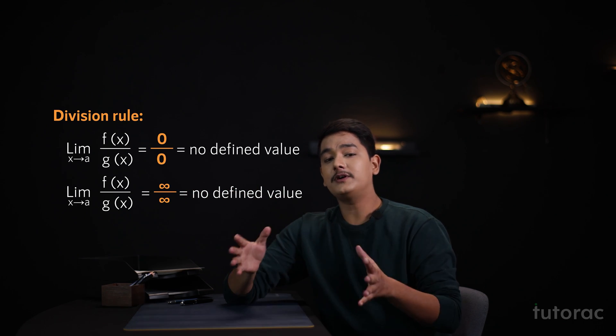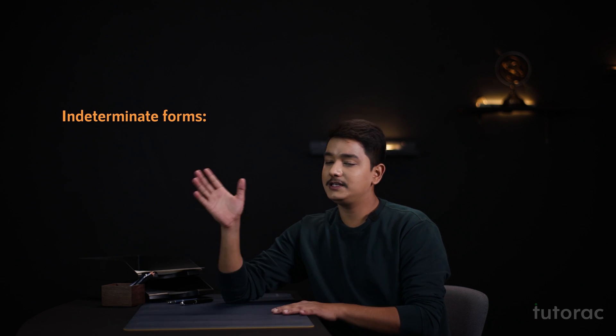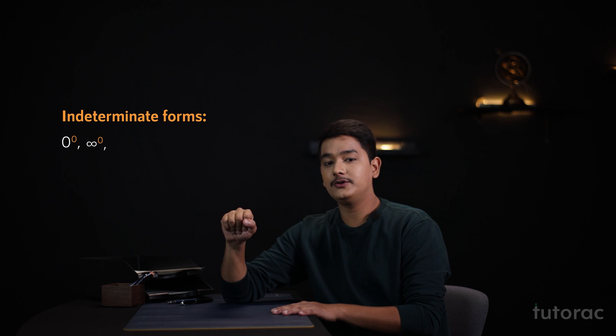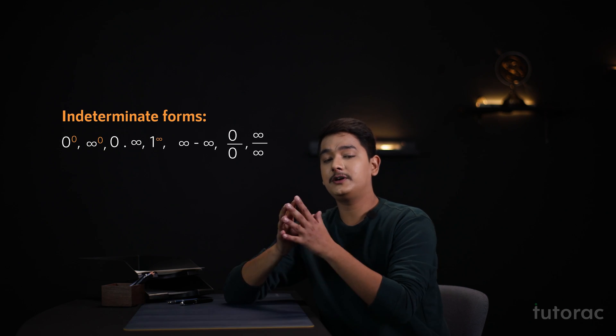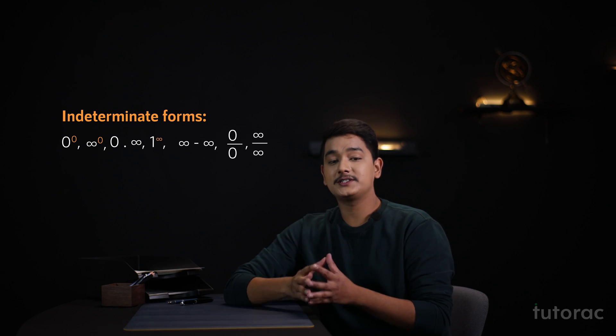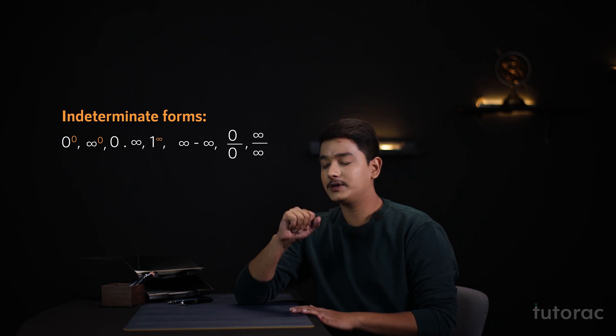I hope that you have understood till now and if we go on to try and find other indeterminate forms, then we will get these forms that are 0 to the power 0, infinity to the power 0, 0 multiplied by infinity and 1 to the power infinity. I hope that you have understood the seven indeterminate forms till now. To understand them better, let us see a few examples.